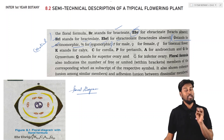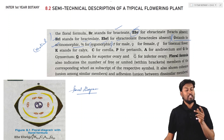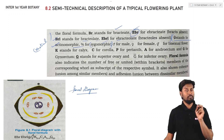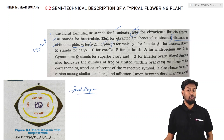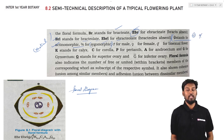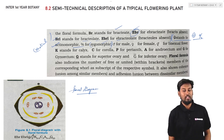Symmetry of the flower is another important symbol. If the flower can be divided into two equal halves from any plane passing through the center, it is called actinomorphic — showing radial symmetry. If the flower can only be divided into two equal halves from one particular plane passing through the center, it is called zygomorphic.